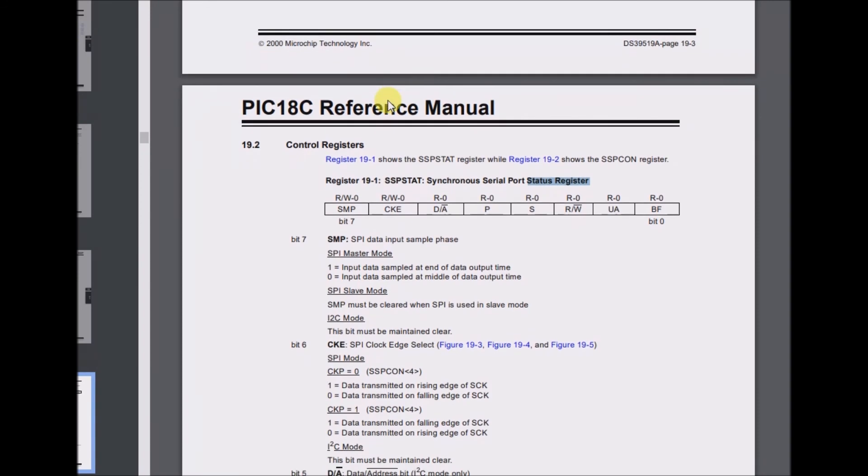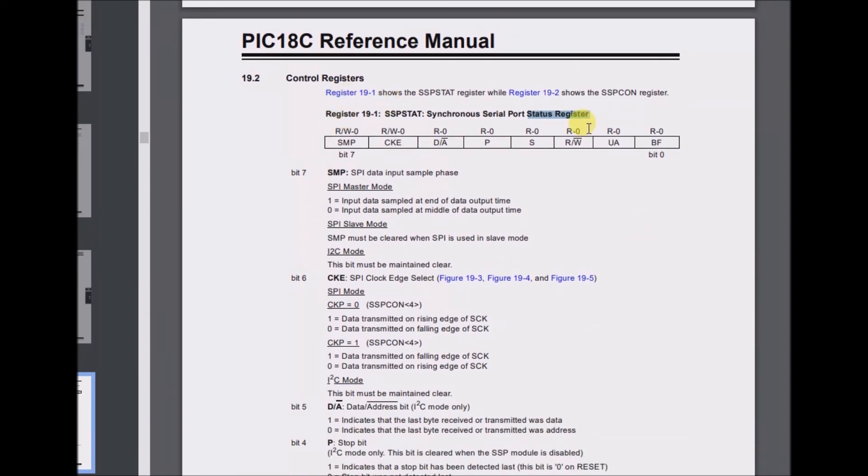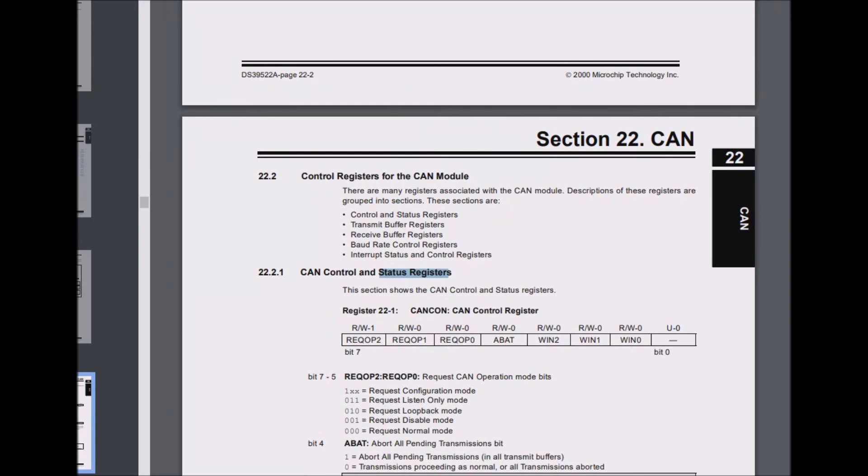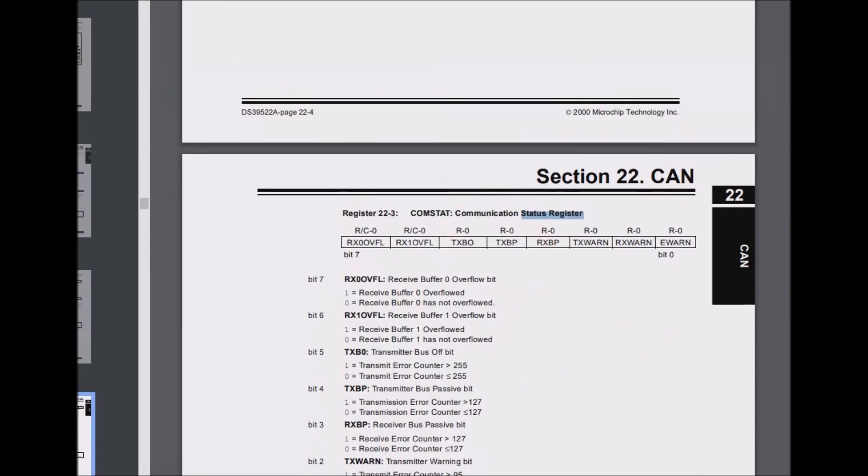I'll drop this in for later study and I won't claim to understand it at this point. Control registers shows the SSPSTAT register, while register 19-2 shows the SSPCON register. Register 19-1 SSPSTAT synchronous serial port status register. So is this even dealing with a status register or is this something else? It deals with the serial ports. Same with this, the CAN module and status registers. So there's a few other SFRs that have their own status registers.